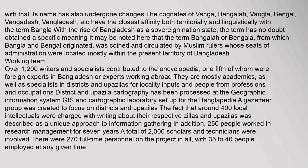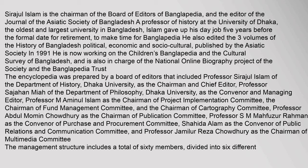Over 1,200 writers and specialists contributed to the encyclopedia, one-fifth of whom were foreign experts or experts working abroad. They are mostly academics, as well as specialists in districts and upazilas for locality inputs. District and upazila cartography was processed at the Geographic Information System (GIS) and Cartographic Laboratory set up for Banglopedia. A Gazetteer Group was created to focus on districts and upazilas, and around 400 local intellectuals were charged with writing about their respective zillas and upazilas — described as a unique approach to information gathering.